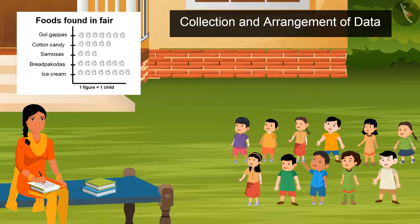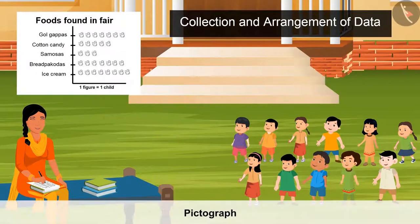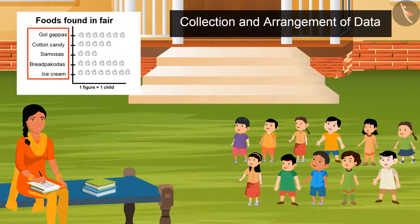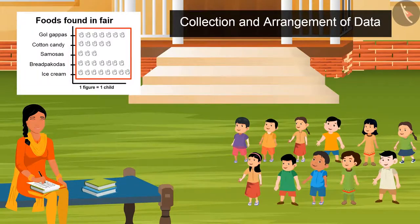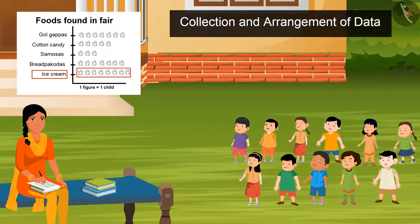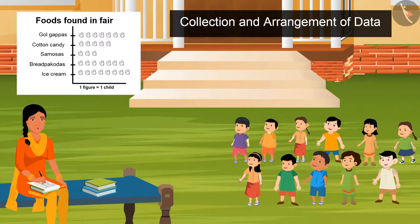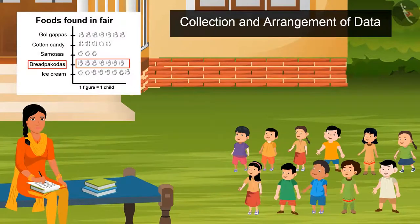Sister, what have you made? Look, this is known as a pictograph. In this, with the help of pictures, I have shown the number of kids with their choices of food. By closely looking at this pictograph, tell me which food is highly chosen by the kids? Ice cream. Absolutely right. Now, tell me what should we buy more — samosas or bread pakoras? Bread pakora. Right. Now tell me how many kids love Gol Gappas?